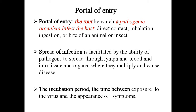Entry can occur by direct contact, inhalation, ingestion, or bite of an animal or insect. The pathogen spreads through lymph and blood and into tissues and organs where they multiply and cause disease. This spread of infection means the pathogen enters our lymph, blood, tissues, and organs, multiplies, and causes disease.